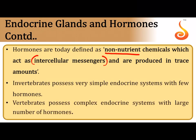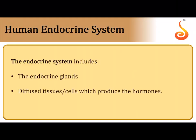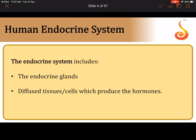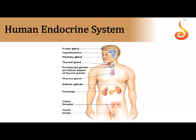Invertebrates have a very simple endocrine system, but only in vertebrates do we have a complex endocrine system. In this chapter we focus on the human endocrine system, consisting of endocrine glands and diffuse tissues and cells throughout the body that produce hormones. Many organs contain endocrine cells that constantly secrete hormones into the bloodstream. The major endocrine glands include the pineal gland, hypothalamus, pituitary, and thyroid located in the throat region.